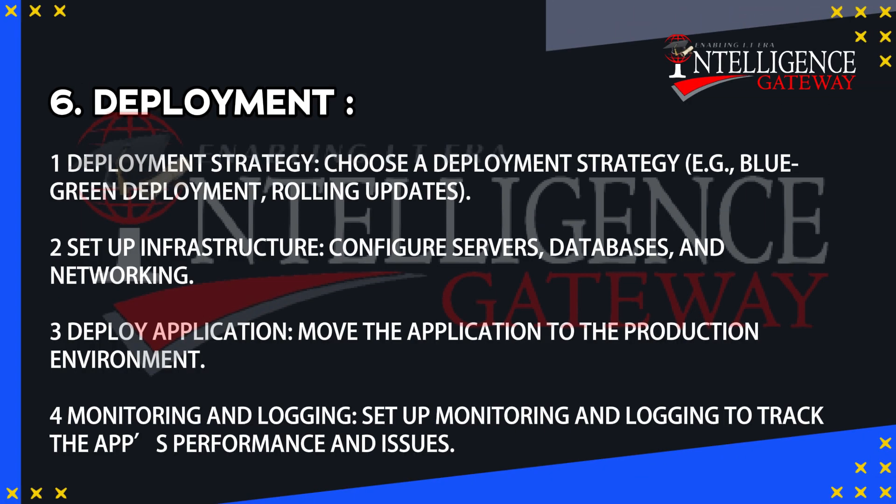The sixth step is Deployment. Choose a deployment strategy such as blue-green deployment or rolling updates. Set up infrastructure by configuring servers, databases, and networking. Deploy the application to the production environment, and set up monitoring and logging to track the app's performance and issues.